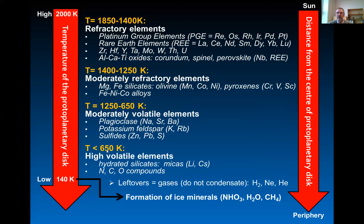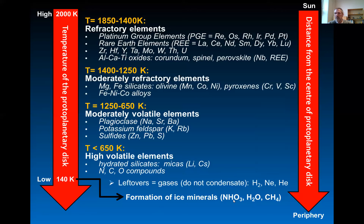Below 650 kelvins we have condensation of volatile elements. We have formation of hydrogen silicates like micas, which contain lithium and cesium. We also have formation of nitrogen, carbon, and oxygen compounds. The leftovers of this condensation sequence are the gases that do not condense — they stay as molecules or atoms, and that includes hydrogen, neon, and helium. Finally, below 140 kelvins we have formation of ice minerals like nitric acid ice, water ice, and methane ice.